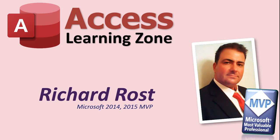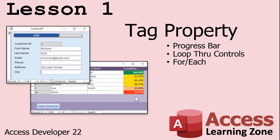Now let's take a quick look at what's covered in each lesson. In lesson one, we're going to learn how to use a progress bar to display how much of a single record in a form is completed. Then we'll put all the records together in a continuous form and show how completed each one of those records is, and we'll jazz it up with some conditional formatting.